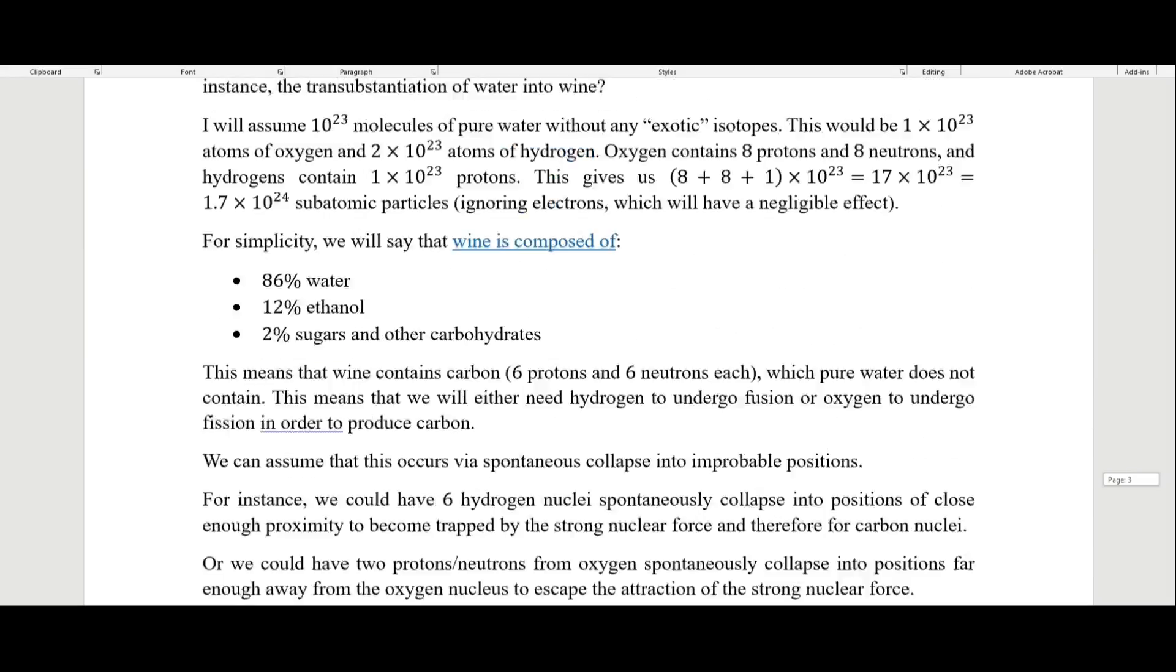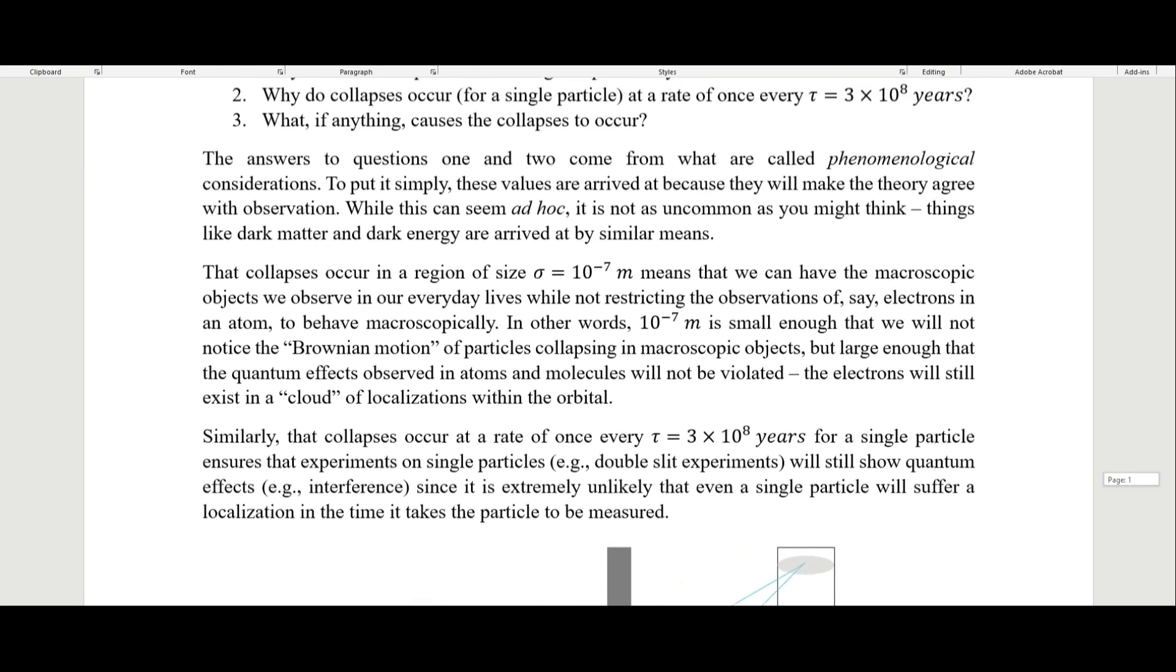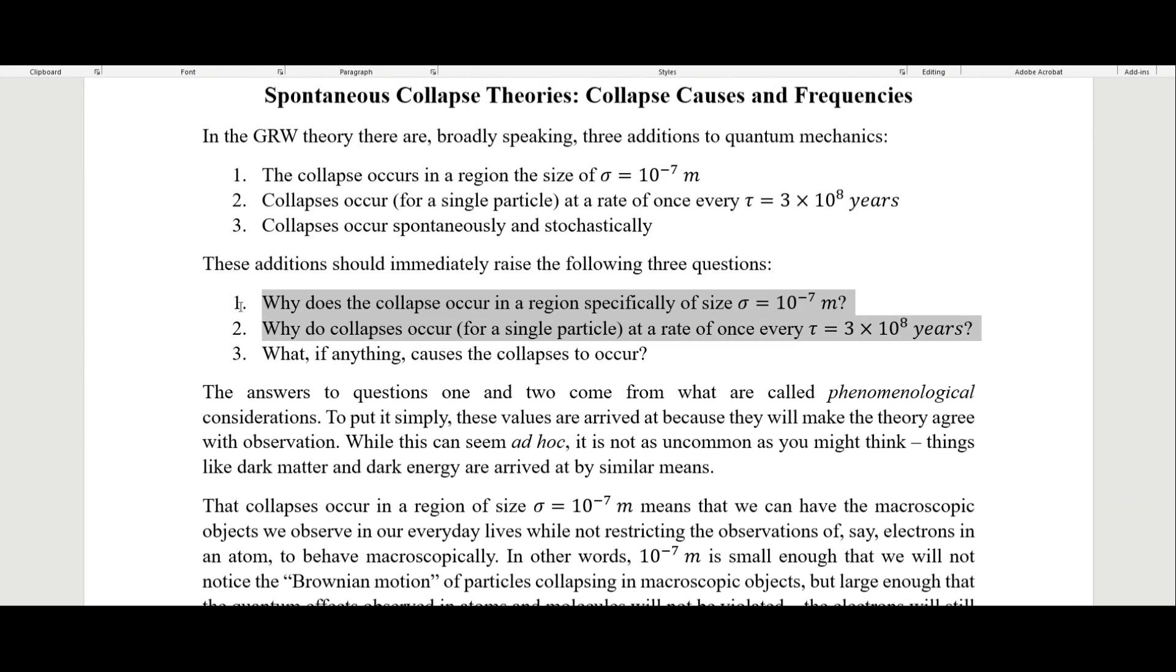That was everything I wanted to talk about in this video. The main take-homes here are that the collapse occurs in a region of size 10^-7 meters, and that the collapses occur at a rate of once every 300 million years. These were arrived at by phenomenological considerations. And in the normal GRW theory, these collapses are just spontaneous and stochastic, so there isn't any sort of underlying mechanism. But there are theories, like Penrose's theory, that do posit a mechanism for this. I hope you found this video interesting, and I will see you in the next one.